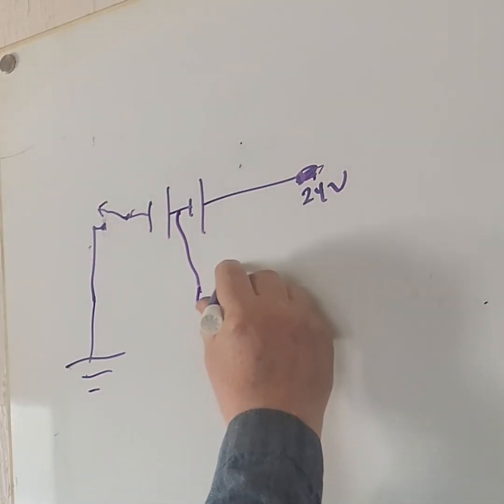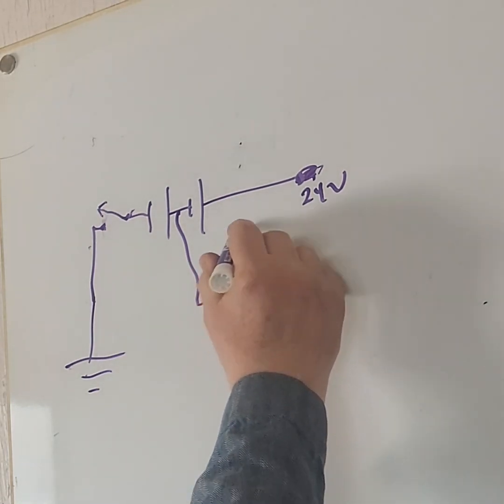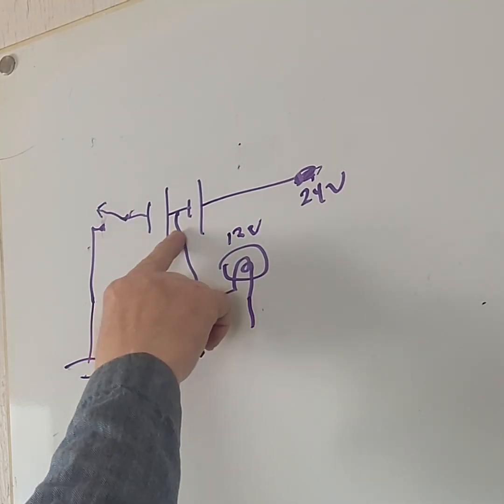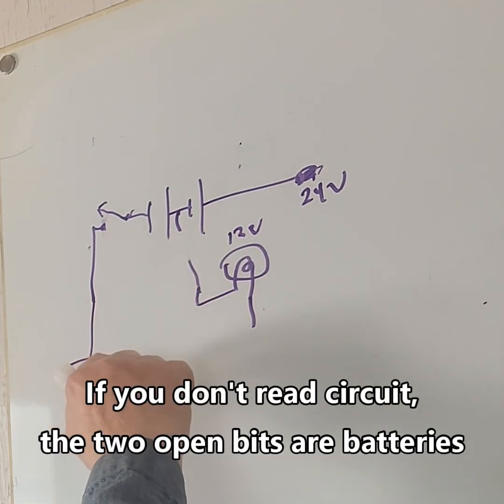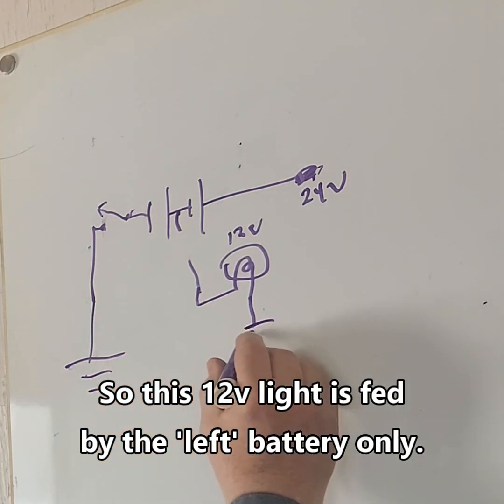Right here a light and it is a 12 volt light and it's not turned on, but it's connected to the ground.